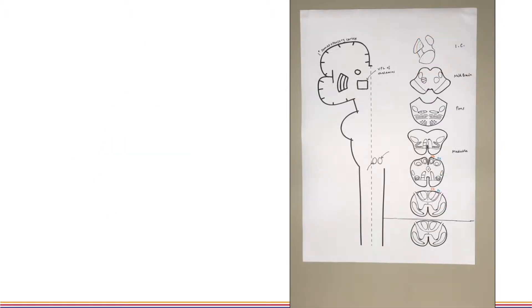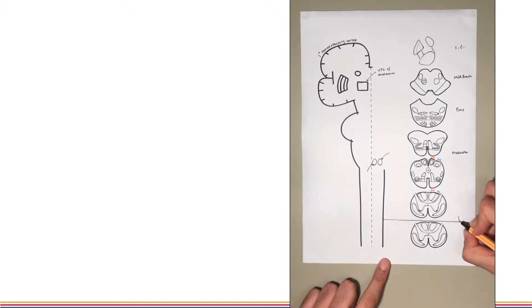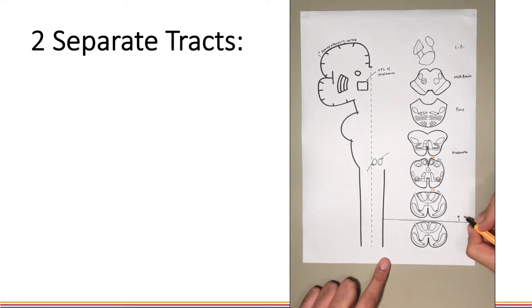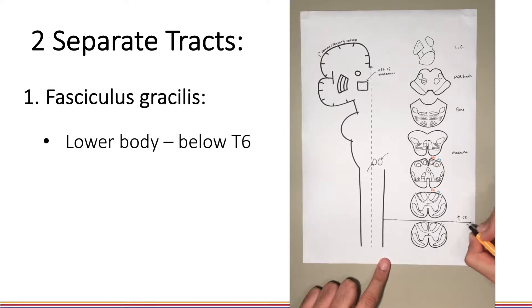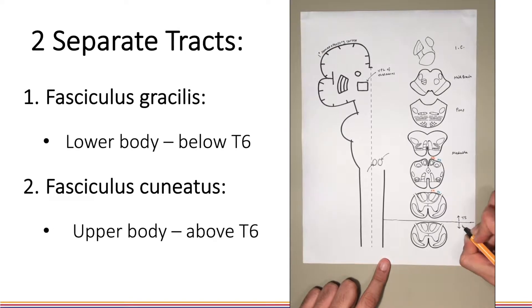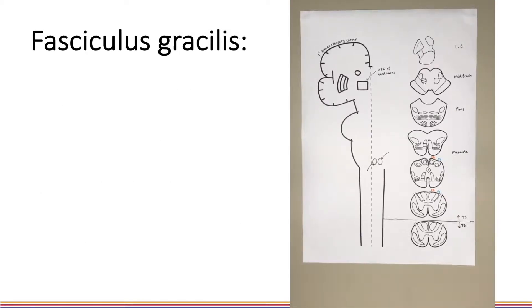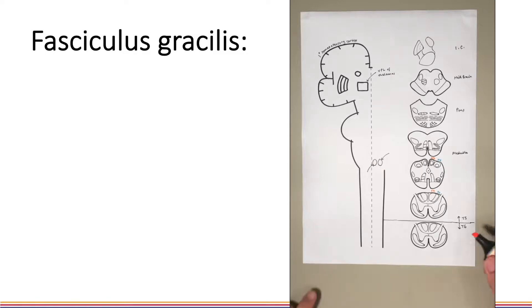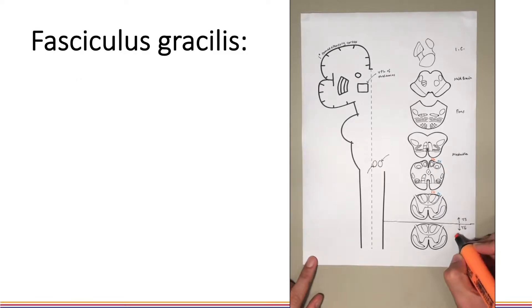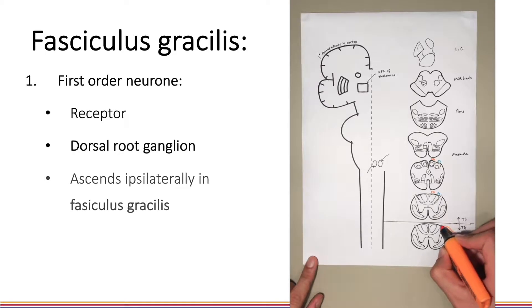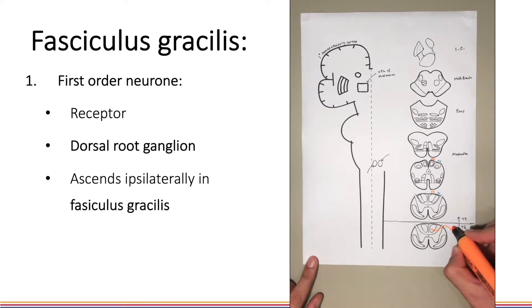The dorsal column pathway carries two-point discriminative touch and conscious proprioception. It's made up of two separate tracks: the fasciculus gracilis for the lower body and fasciculus cuneatus for the upper body. Firstly, we'll look at the fasciculus gracilis which serves the lower body. This exists the length of the cord with inputs from sacral, lumbar and thoracic segments up to T6. The first order neuron from the receptor ascends ipsilaterally in the cord in the fasciculus gracilis.